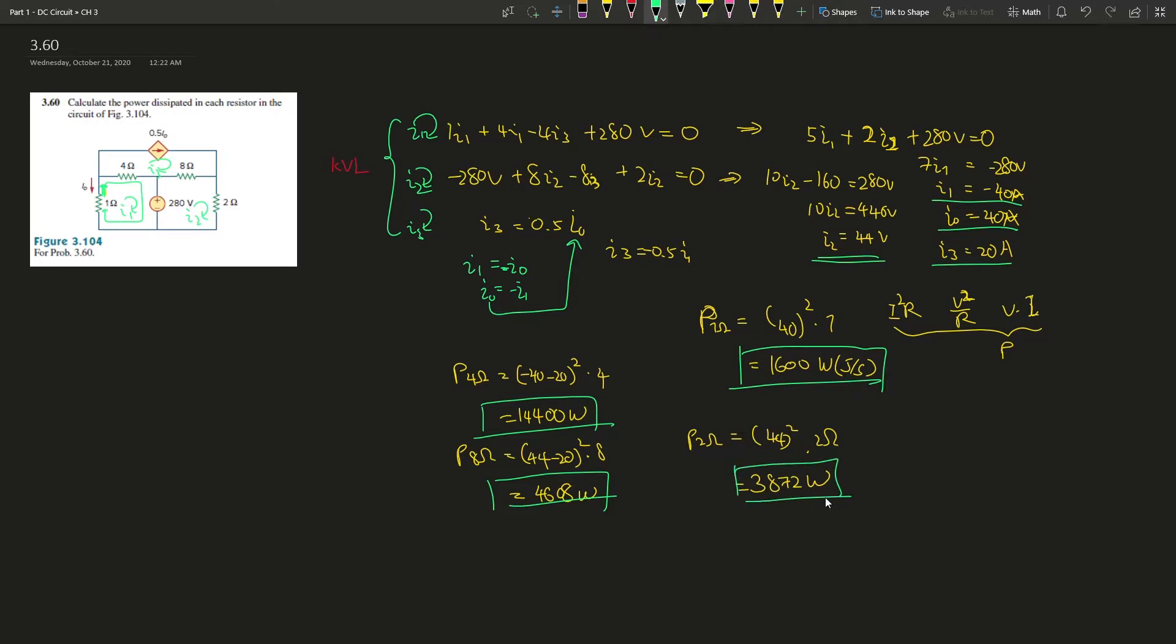So let's circle our answer. The 1 ohm, 4 ohm, 8 ohm, and 2 ohm resistors power dissipated are listed in these brackets. This is a really interesting one, it's circuit analysis where you have to use mesh analysis system to find the current and use the current to find out the powers.